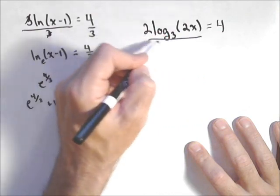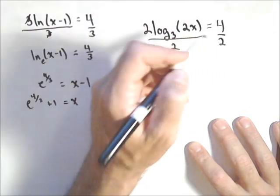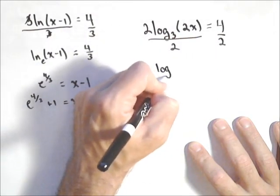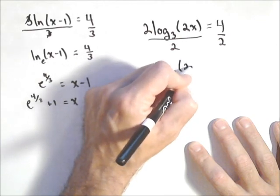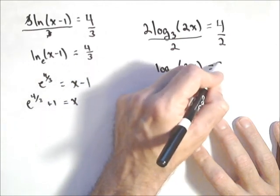First step would be divide both sides by two. And I get log base three of two x equals two.